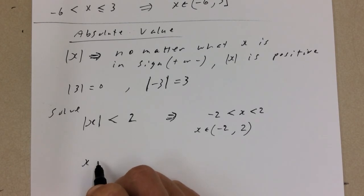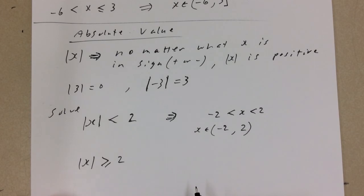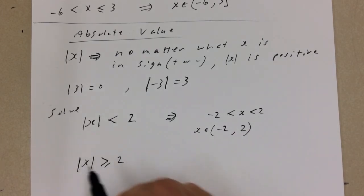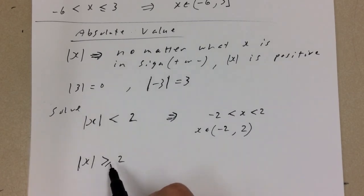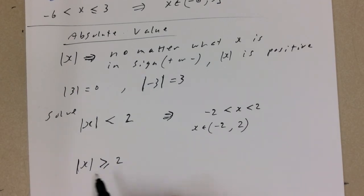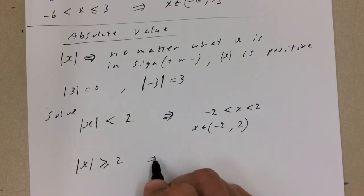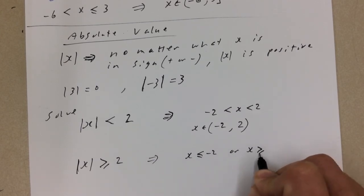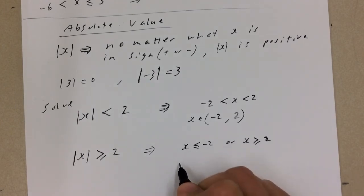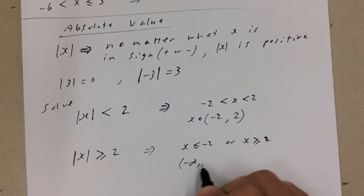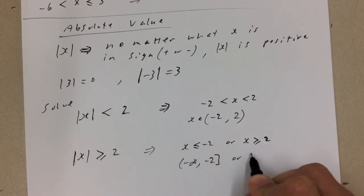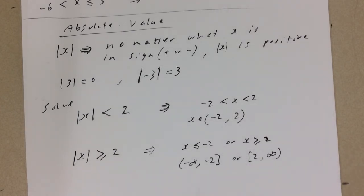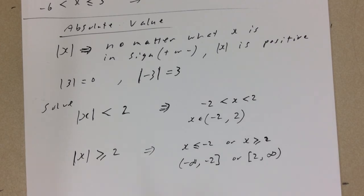If the absolute value of x is greater than or equal to 2, we're looking at numbers greater than or equal to 2, but also less than negative 2 — because the absolute value of negative 4 is 4, which is greater than 2. So this means x ≤ negative 2 or x ≥ 2. This needs to be written in two pieces: (negative infinity, negative 2] or [2, infinity). Those are the key things to know for absolute value inequalities.